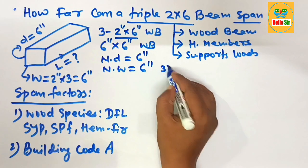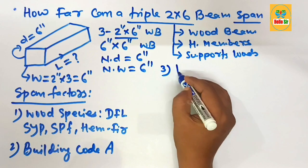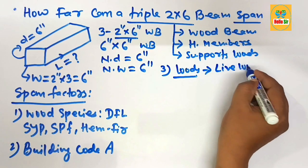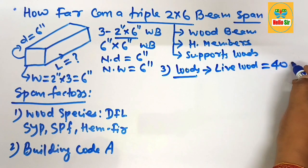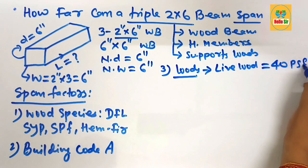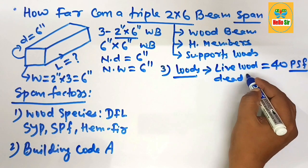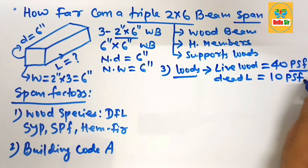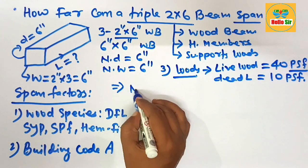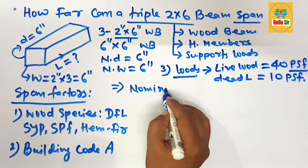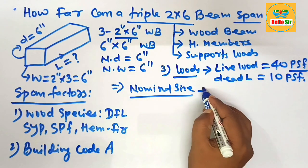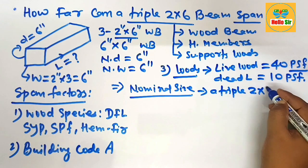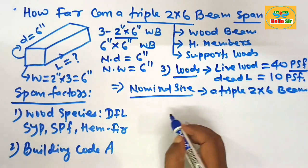The second factor is the building code in your area. The third major factor that determines span length is load condition. Load includes live load, which may be about 40 pounds per square foot, and dead load, which is about 10 pounds per square foot. The nominal size of this wood beam is a triple 2 by 6 beam.